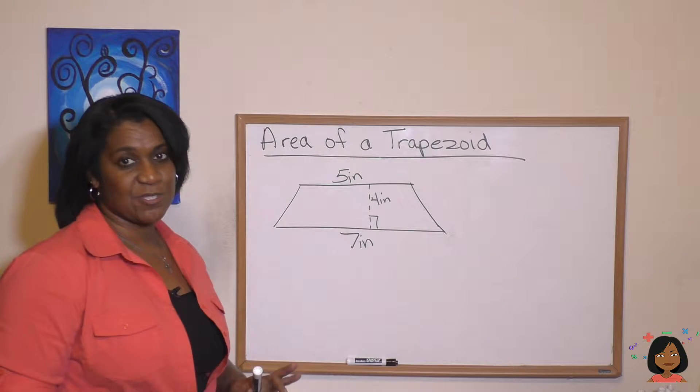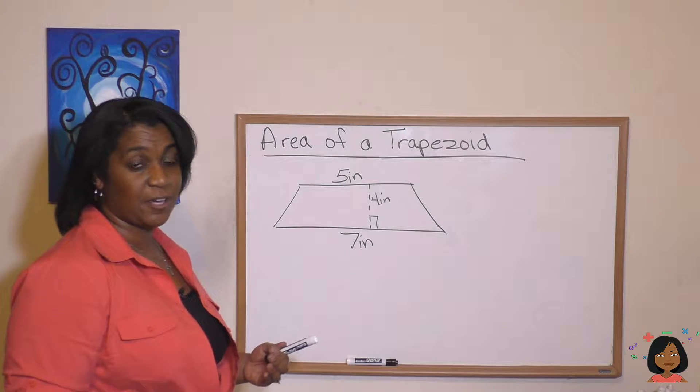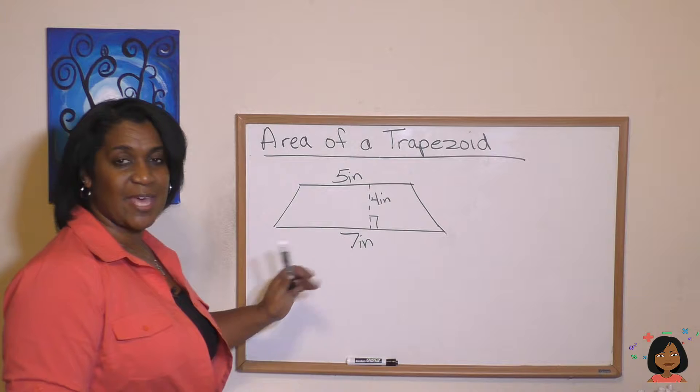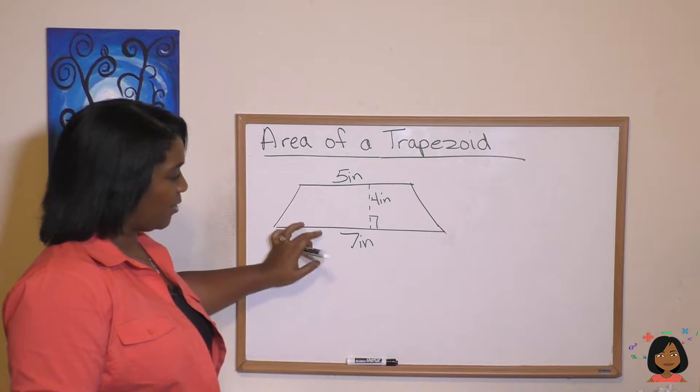Let's take a look at this example. Here we have a trapezoid. And if you remember, a trapezoid is a polygon, a four-sided figure, but it only has one set of parallel sides. So here's a parallel side, one set, there and there.